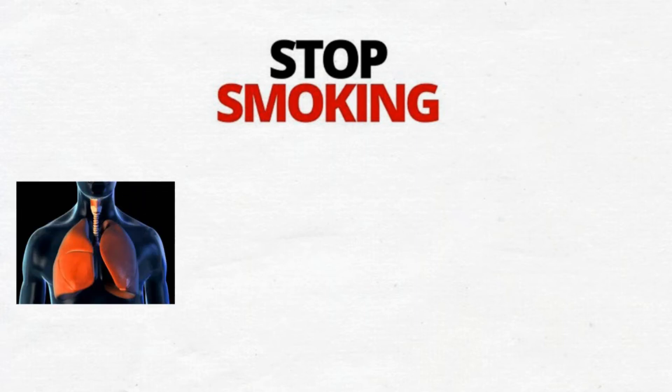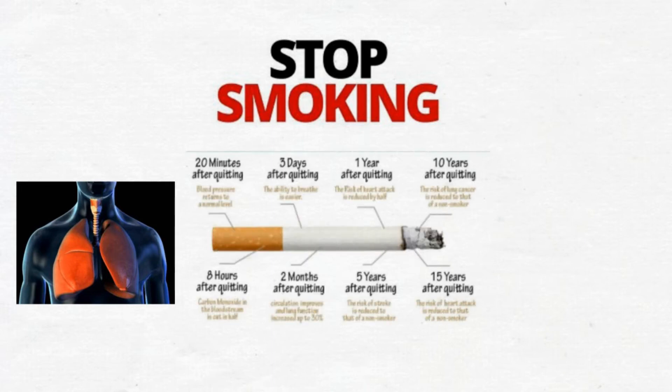Smoking affects the coronary arteries that supply blood to your heart, damaging the lining of blood vessels, which can lead to narrowing and blocking of the arteries. Smoking can reduce the amount of oxygen being carried in the blood, can contribute to high blood pressure and an increased heart rate, as well as lower levels of HDL or good cholesterol.